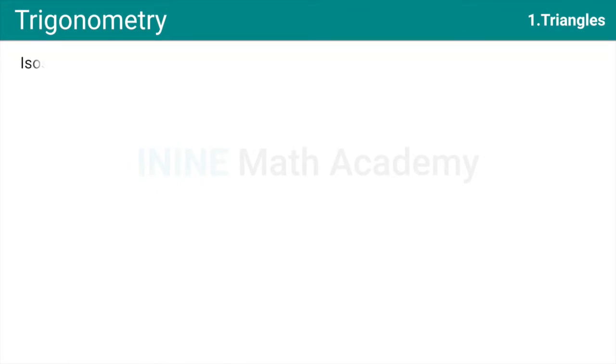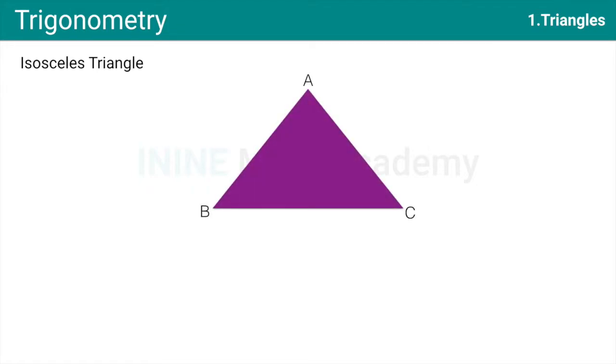The next triangle is Isosceles Triangle. Isosceles Triangle is that triangle where at least two sides of the triangle are equal. In our case, we are considering AB and AC as equal sides. If that be the case, then Angle B is equal to Angle C. That is, the angles at the equal side should also be equal.